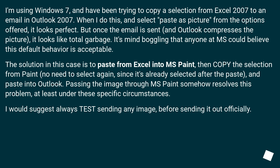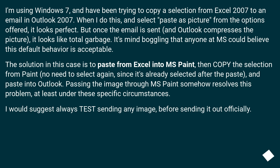I'm using Windows 7, and I've been trying to copy a selection from Excel 2007 to an email in Outlook 2007. When I do this and select 'Paste as Picture' from the options offered, it looks perfect. But once the email is sent and Outlook compresses the picture, it looks like total garbage. It's mind-boggling that anyone at Microsoft could believe this default behavior is acceptable.